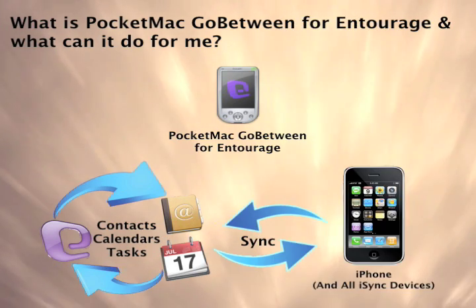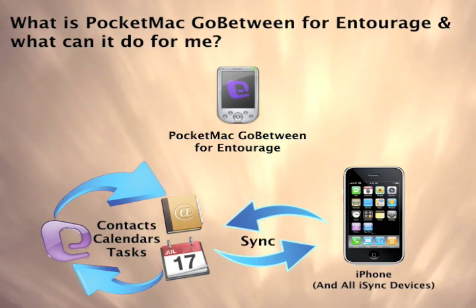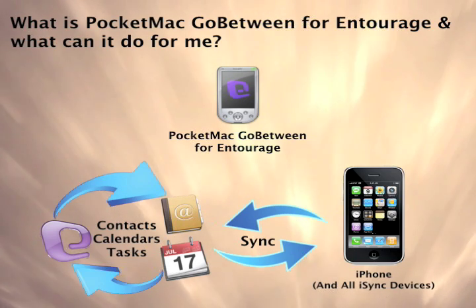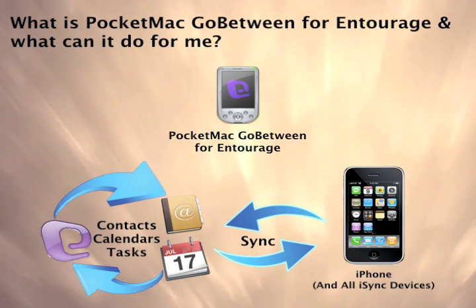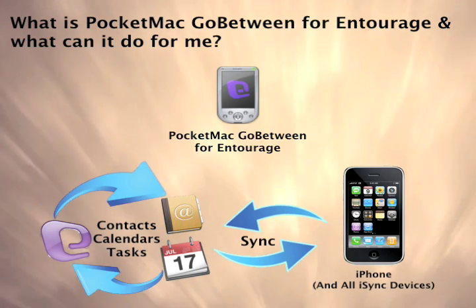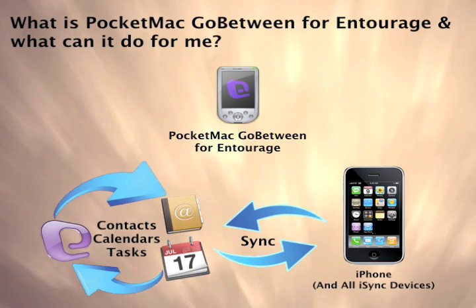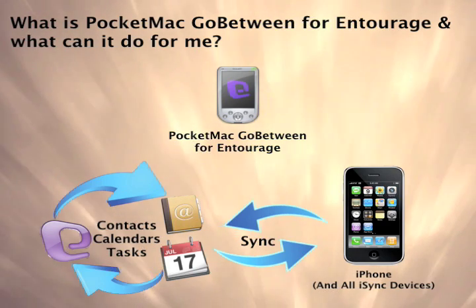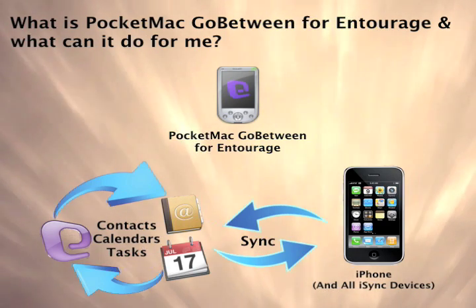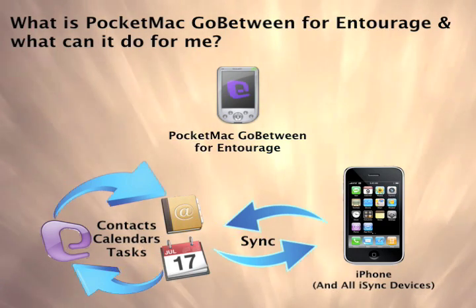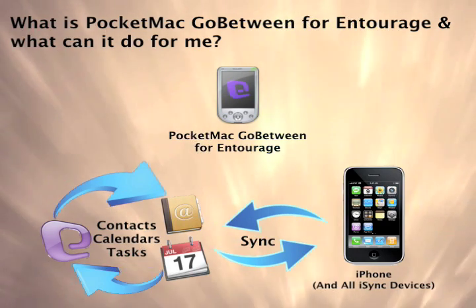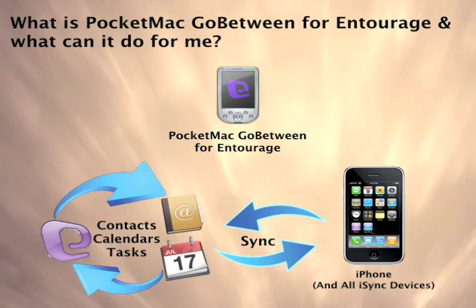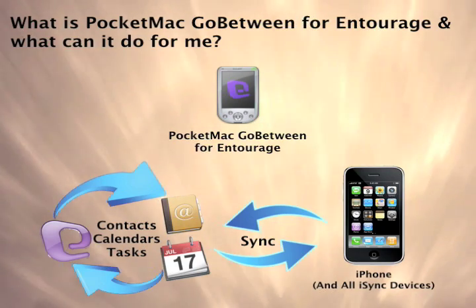First, Pocket Mac Go-Between for Entourage syncs your Entourage data with iCal and Address Book on your Mac. Now, the data from Entourage will be included the next time you sync your iPhone or iSync device. And any changes you make on your device will be synced back to Entourage the next time you use Go-Between.